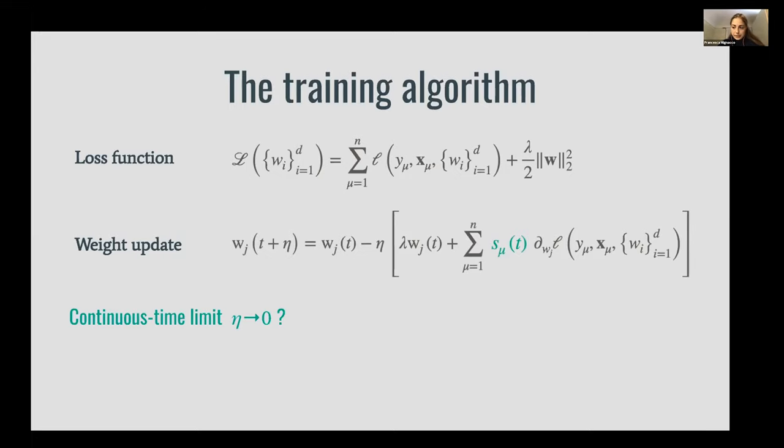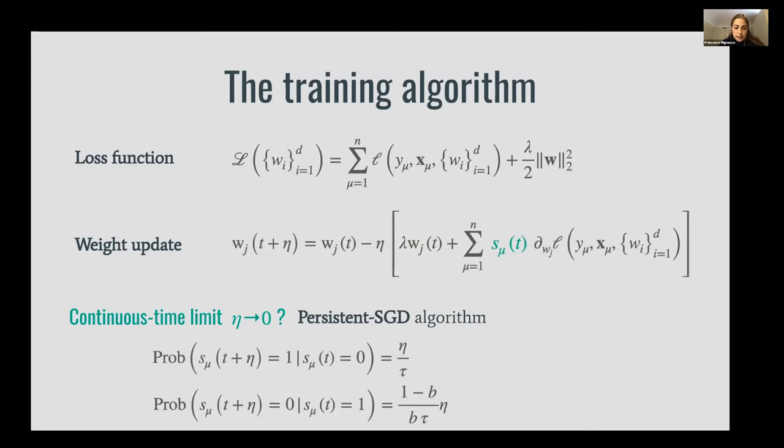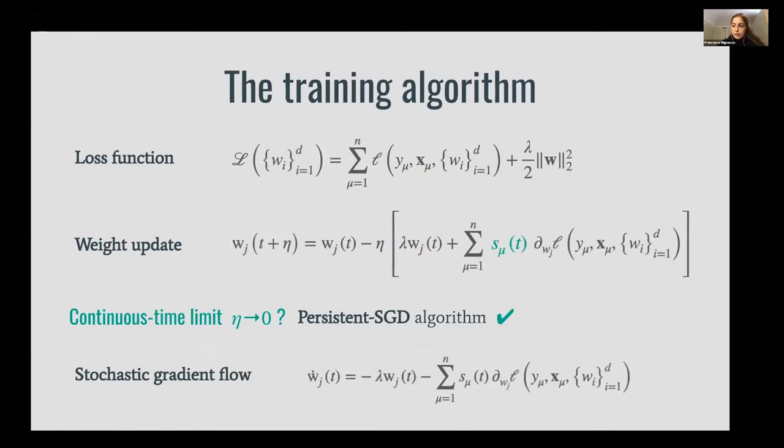Our analysis requires taking the continuous time limit of this weight update. Therefore, we need to define a stochastic process for these binary variables s_mu in such a way that this continuous time limit is well defined. To this end, we introduce a variant of the stochastic gradient descent algorithm that we call persistent stochastic gradient descent, where at each time, as in the usual SGD algorithm, we fix a fraction of samples that are used to compute the gradient.